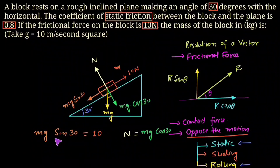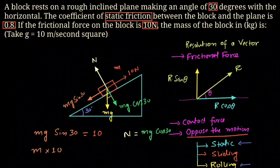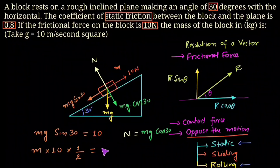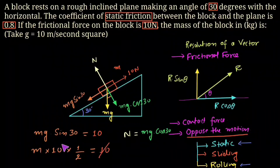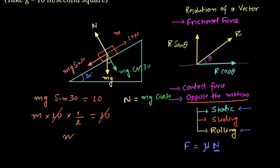So mg sin 30 equals the frictional force of 10 Newton. Solving: m × 10 × sin 30 = 10, which gives m × 10 × (1/2) = 10. The 10s cancel, so m = 1 × 2 = 2 kg.